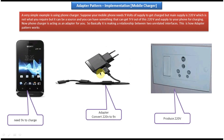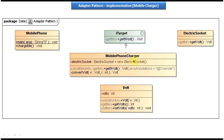Corresponding to this mobile charger I created a MobilePhoneCharger class, which has a get9Volt method. This MobilePhoneCharger implements ITarget. ITarget has a get9Volt method which is an abstract method, and this abstract method will be implemented by MobilePhoneCharger. What this get9Volt method will do is call the ElectricSocket getVolt method, get 120 volts, then convert 120 volts to 9 volts, and return 9 volts back to the mobile phone so it can charge properly.